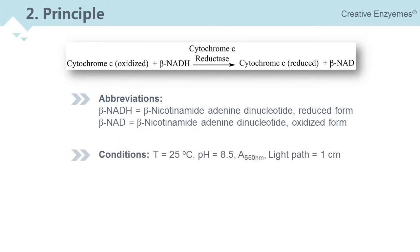The assay is tested at 25 degrees centigrade and pH of 8.5 with wavelength of 550 nanometers and light path of 1 centimeter. Continuous spectrophotometric rate determination is used in this assay.